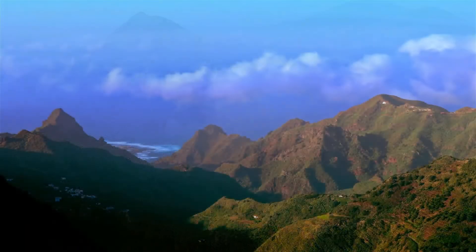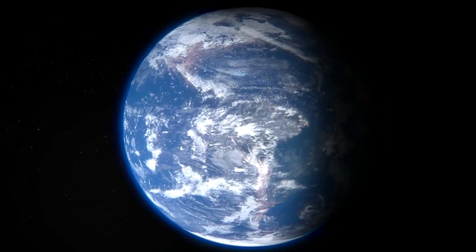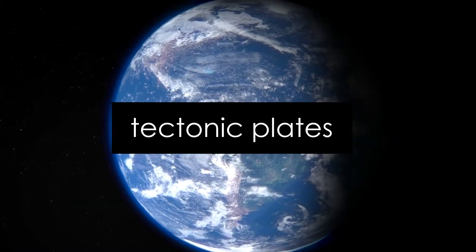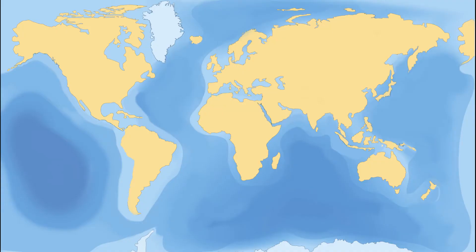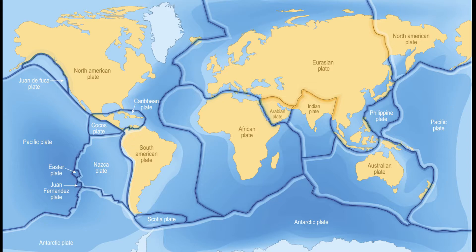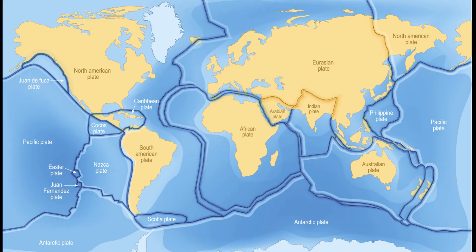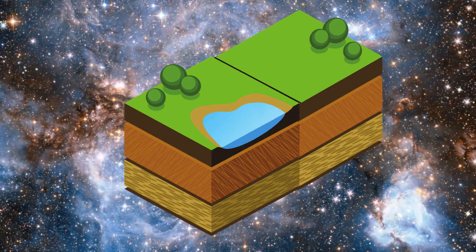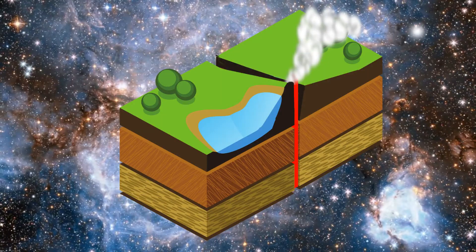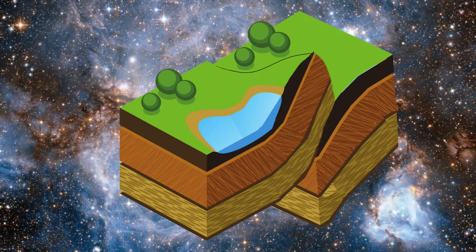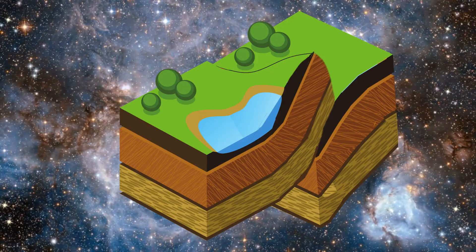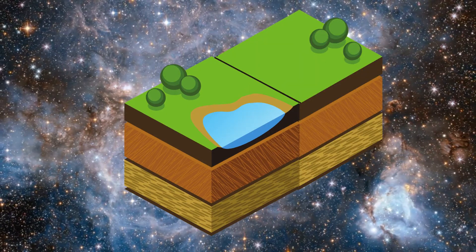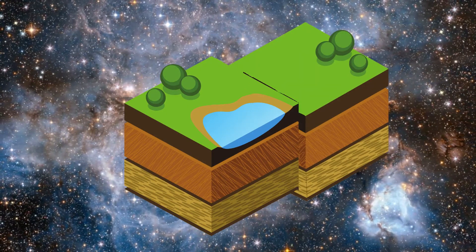Another way that mountains and valleys form is due to the movement of the earth's tectonic plates. The earth's crust is not one solid piece, but is broken up into large sections called plates, kind of like the pieces of a puzzle. The energy inside the earth causes the plates to move around. When two plates move up against each other, they may both push up or one might fold underneath the other. Sometimes sections of plates sink down in a big piece called a block.